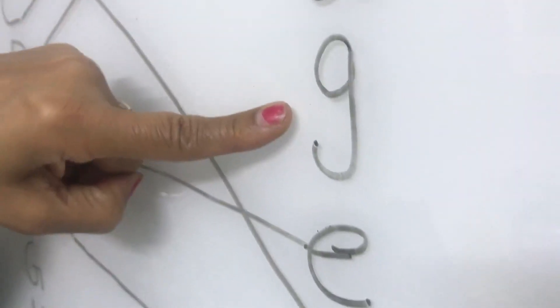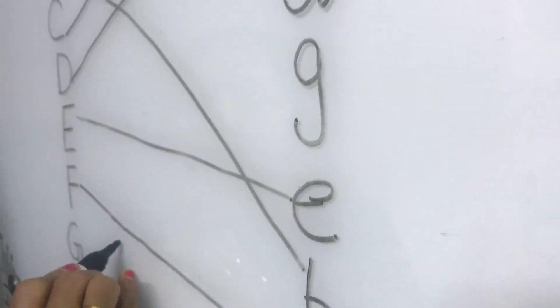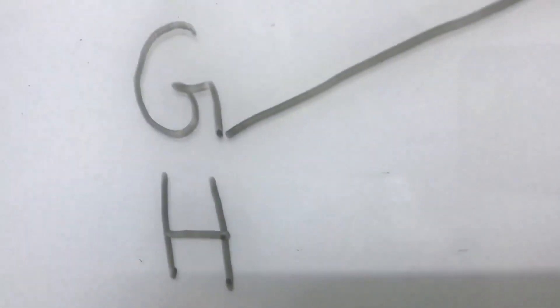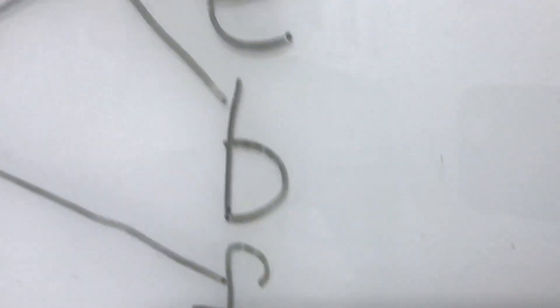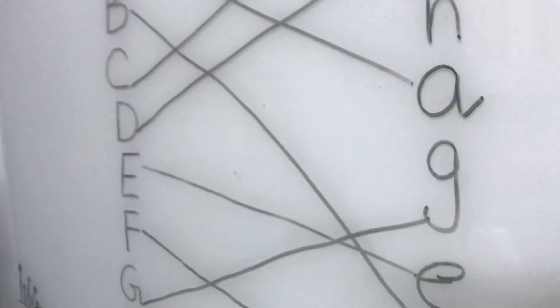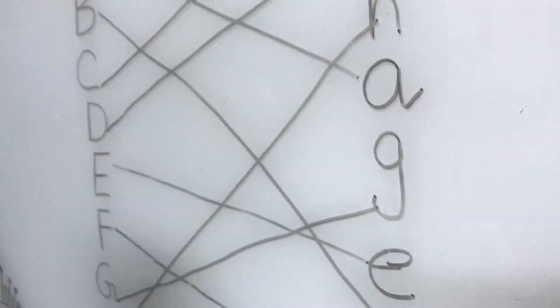Now this is capital G. Where is G children? So from here we should go to small G. And last one — what is this? Capital H. Where is the small H children? So we should go from here and join like this.